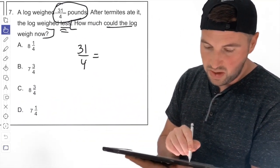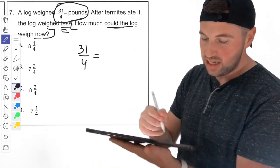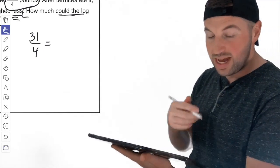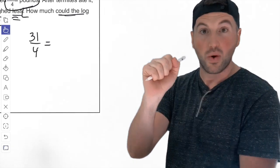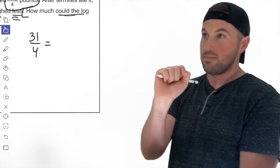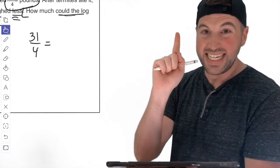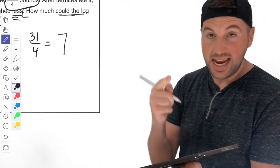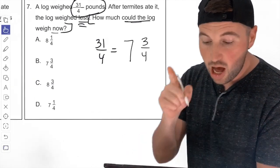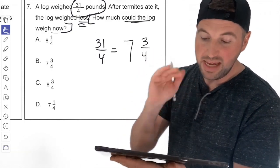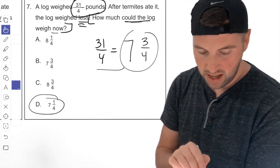Number seven, last one: how much could the log weigh now? We need the one less than 31 fourths. Let's convert to a mixed number. A whole is 4 fourths. 4 times 7 is 28 — how much extra to reach 31? That's 3 extra. So 31 fourths equals 7 and 3 fourths. Now find the answer choice that is less than 7 and 3 fourths. Looking through the options — the answer is D.